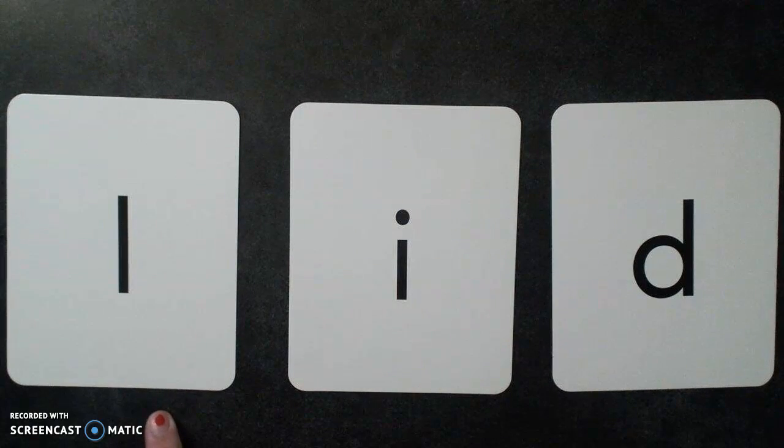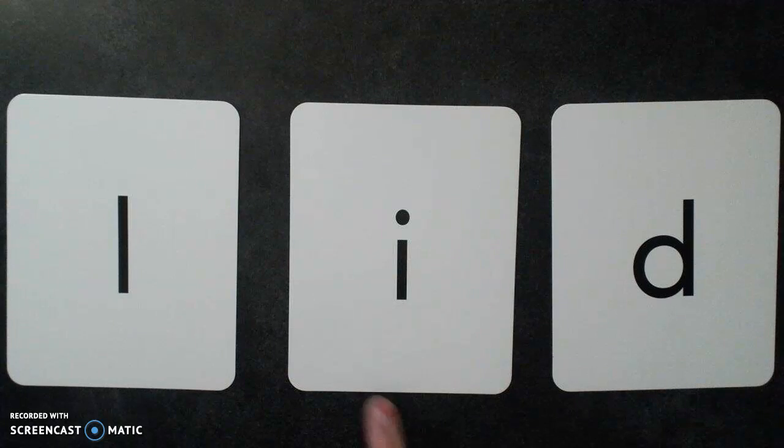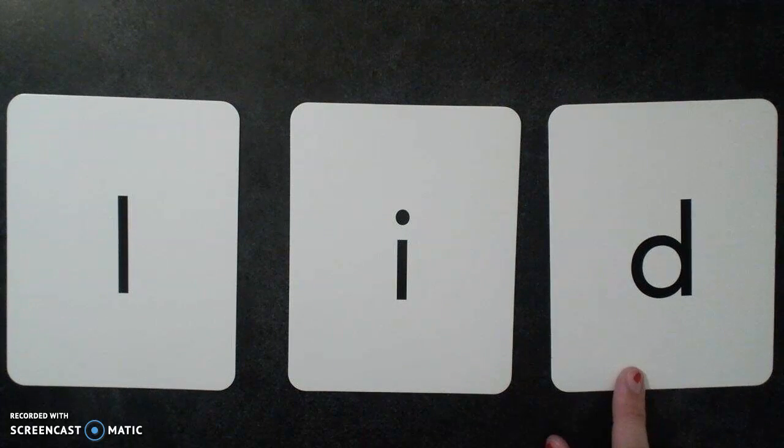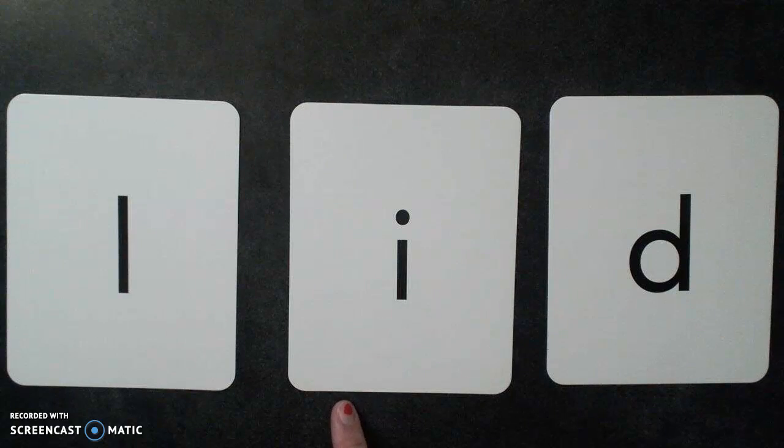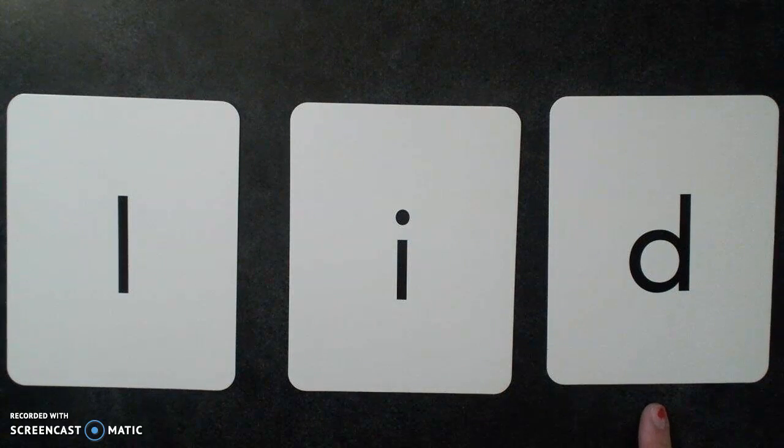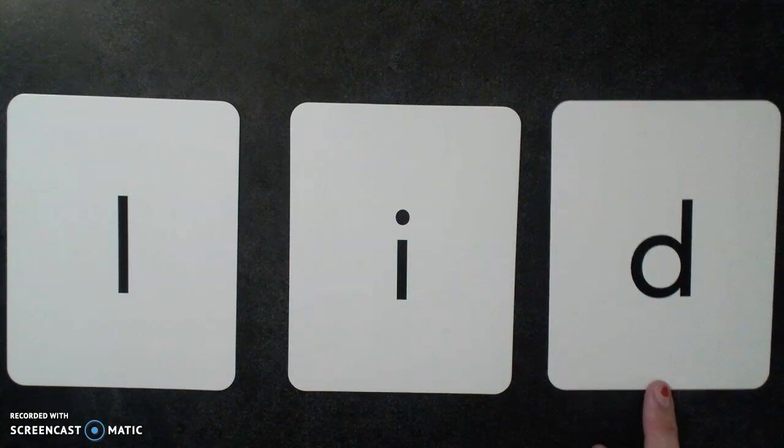Alright, so we have an L that makes the L sound. The I, since it's the only vowel and it's followed by a consonant, it makes the short I sound. And then our D makes the D sound. So let's blend it.